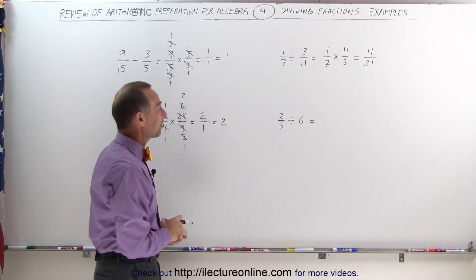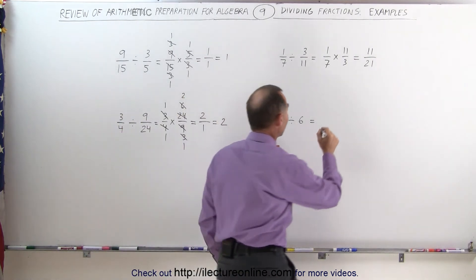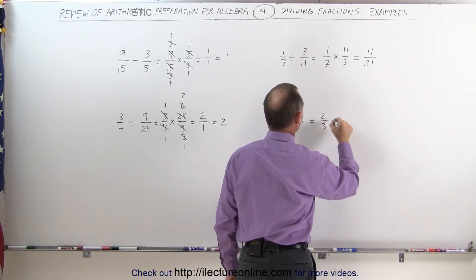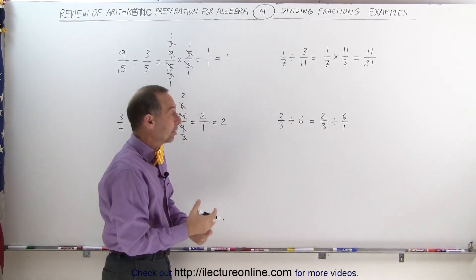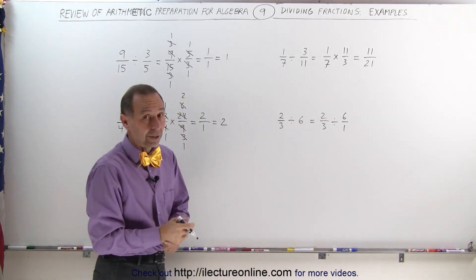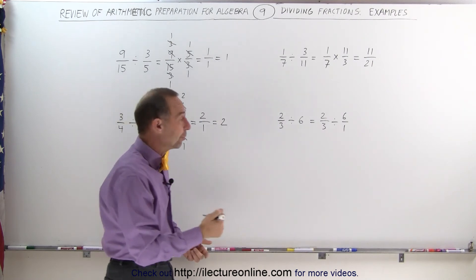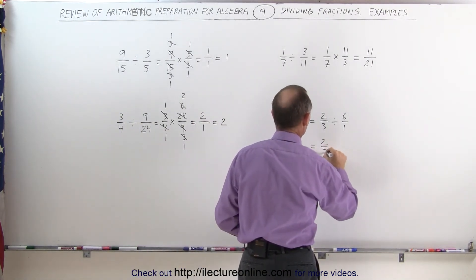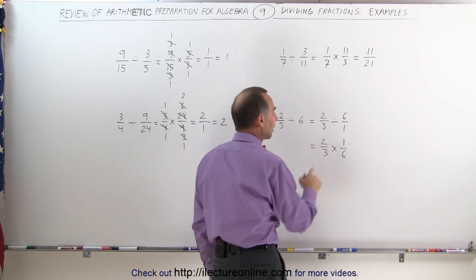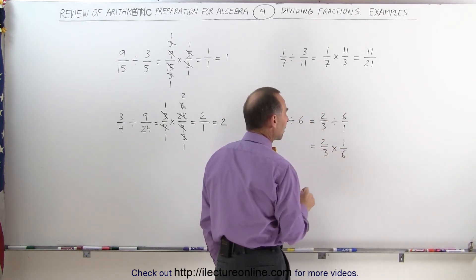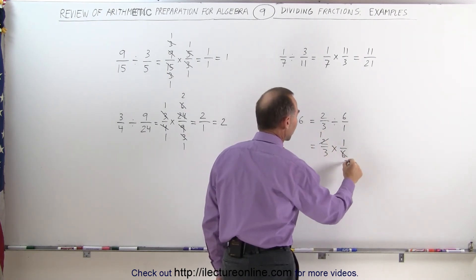2/3 divided by 6. Think of it as being a fraction, think of this as being 2/3 divided by 6 over 1. You can always take an integer and divide it by 1 and nothing changes, because 6 divided by 1 is still 6. Now you're going to multiply by its inverse, this then becomes 2/3 times 1 over 6. Now you see that the 2 and the 6, they have something in common, 2 can be divided by 2 to become 1, 6 can be divided by 2 to become 3.